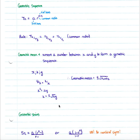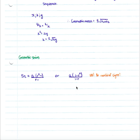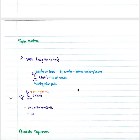A geometric series is the sum of the terms in a geometric sequence. The formula is: Sn equals a times r to the n minus 1, all over r minus 1. The same formula can also be written in an alternative format, but you must be careful of your signs as people often mix them up. These formulas are given on the formula sheet.